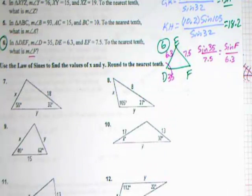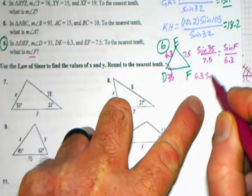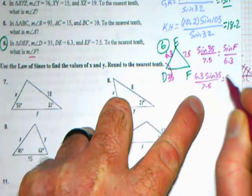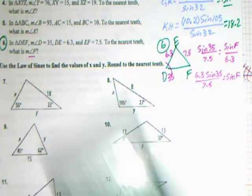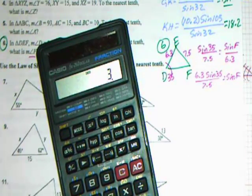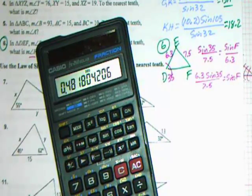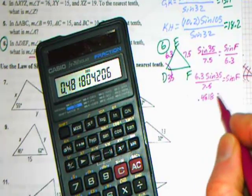We need to solve this. Multiply both sides by 6.3. 6.3 sine of 35 divided by 7.5 is equal to sine of F. Let's bring the calculator out and see what we get. 6.3 times sine of 35, and we want to divide by 7.5. It comes out to be .4818.